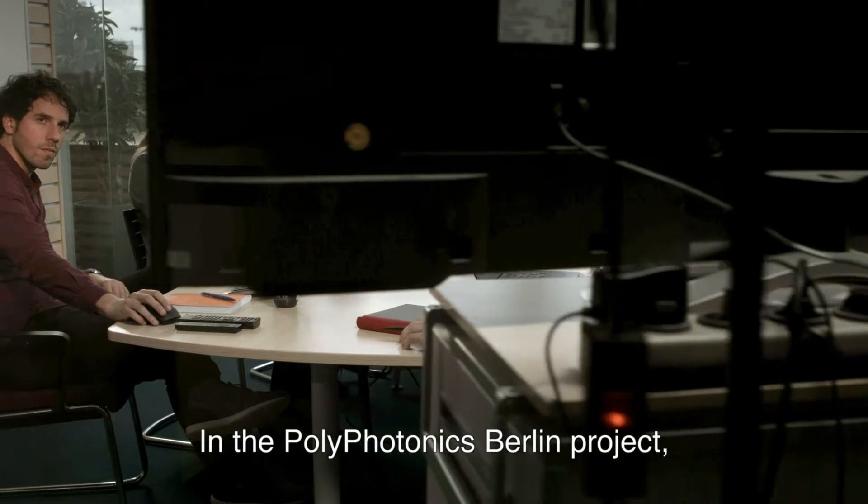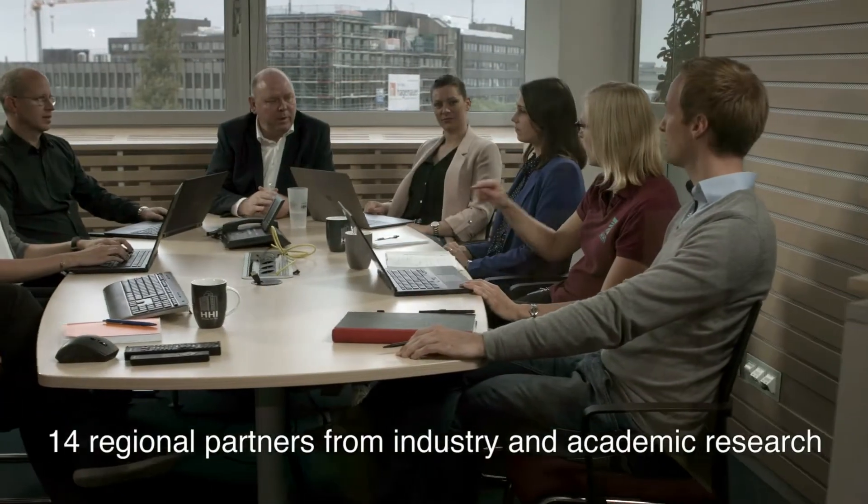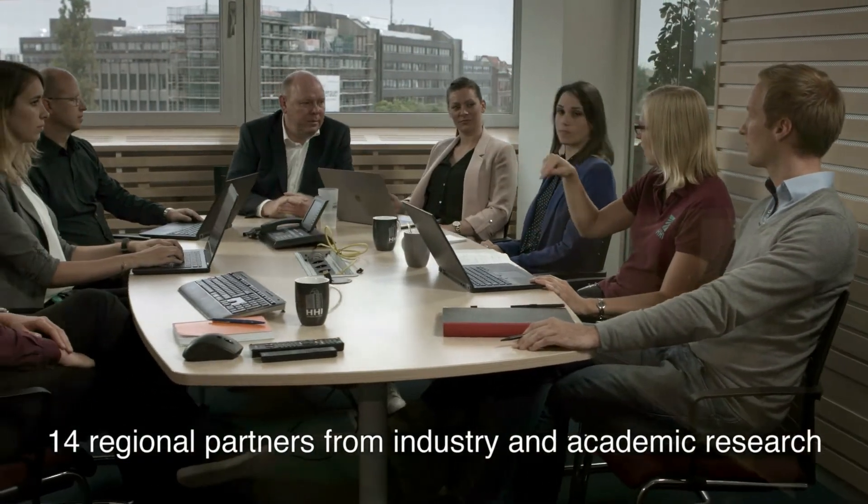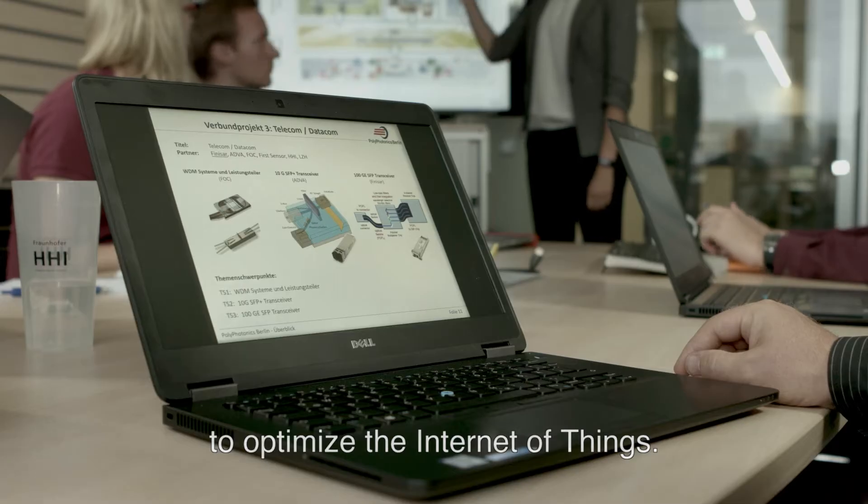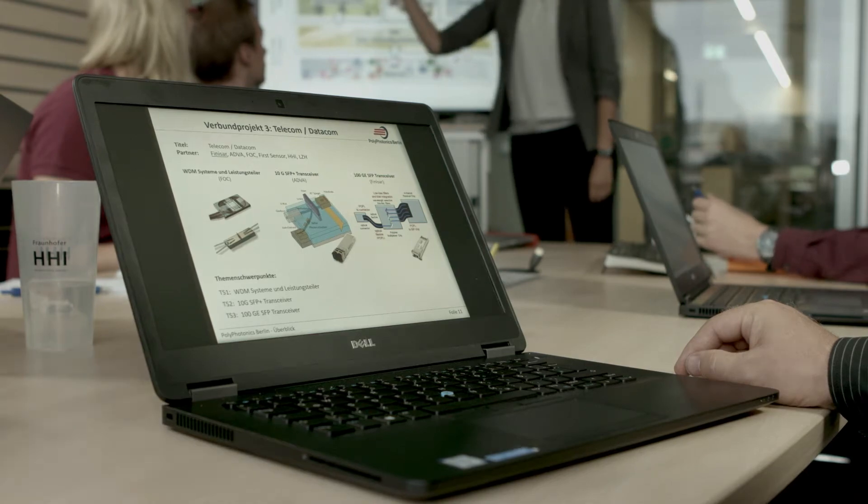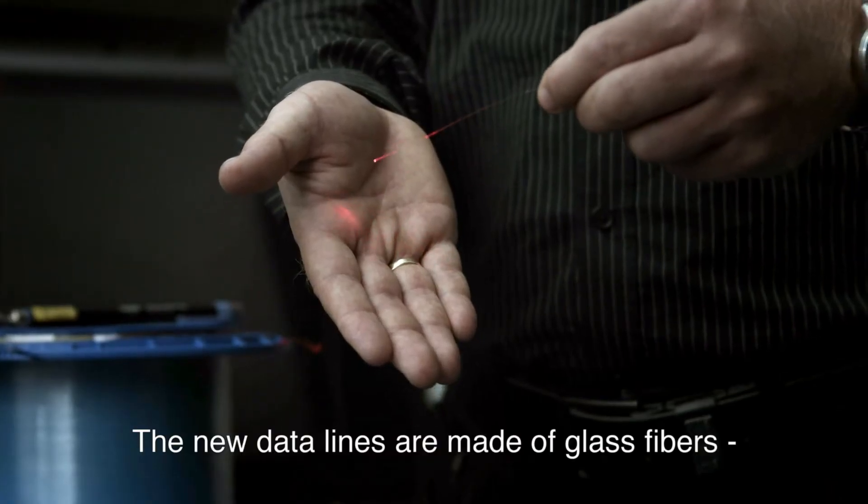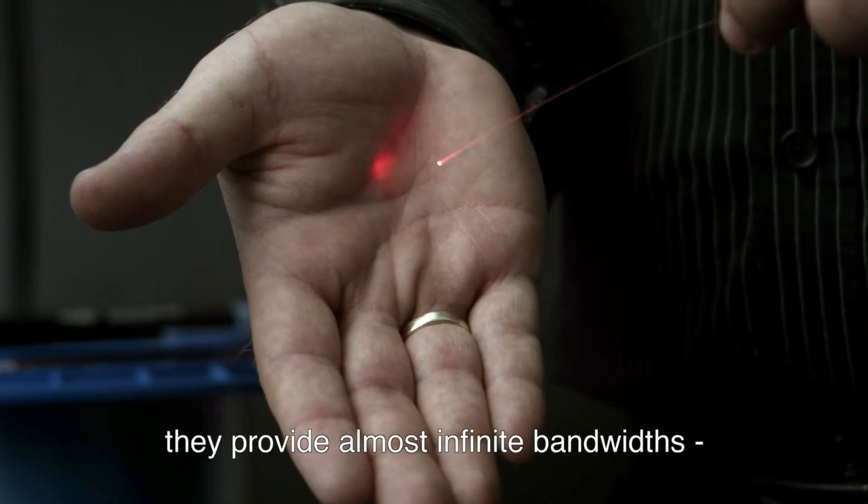In the Polyphotonics Berlin project, 14 regional partners from industry and academic research are working together to optimize the Internet of Things. The new data lines are made of glass fibers. They provide almost infinite bandwidth, but need a completely new periphery.